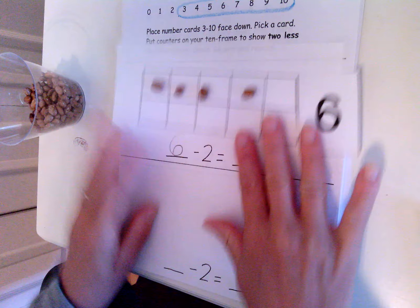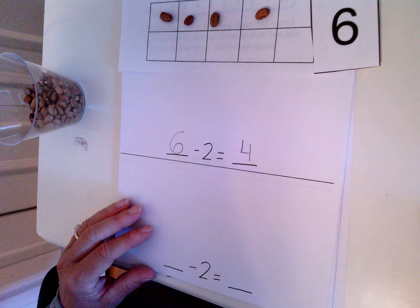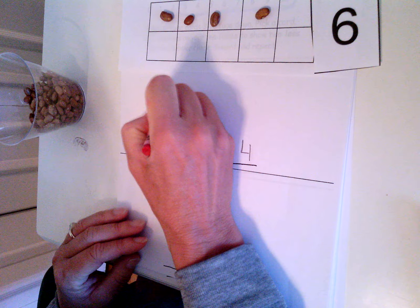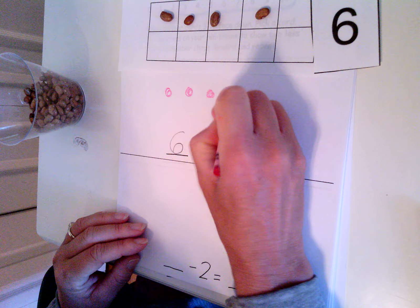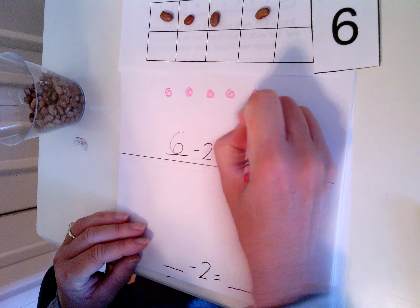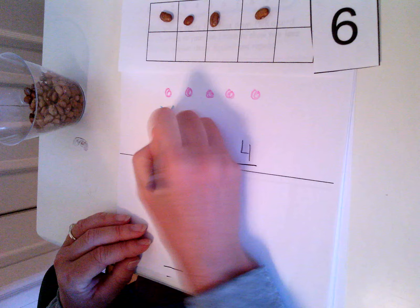Now I'm going to draw it. I have six: one, two, three, four, five, six. I'm drawing it just like it looked on the ten-frame, and I'm crossing out two: one, two. Now I have one, two, three, four left.